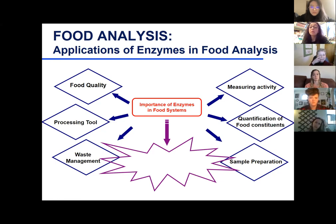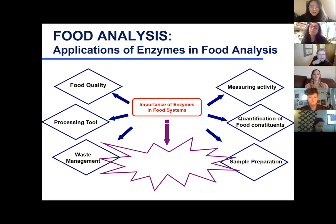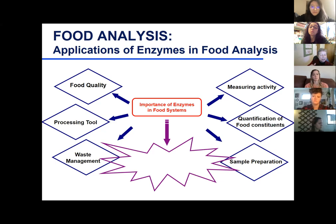Somebody said enzymes for carbohydrate content — one student mentioned pullulanase, which is one of them. You can quantitate starch and glucose using amylases to break down the starch, then glucose oxidase and peroxidase to react with the glucose. You've already covered those in the carbohydrate analysis chapter.